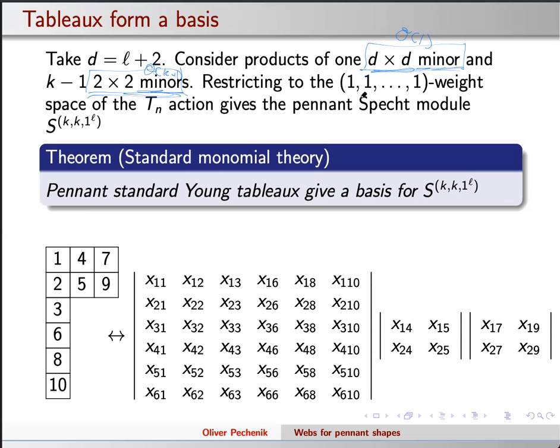And again, like I have this torus acting on my big matrix of variables, scaling all the columns of this big matrix of variables. And let's make the numbers work out so that I can think about this all ones weight space. So now I'm going to think about products of minors where I take one huge minor that's as big as possible, and a whole bunch of two by two minors with the property that among all these minors, every column of my matrix gets visited exactly once. So either it gets visited in the big minor, or it gets visited in one of my two by two minors.